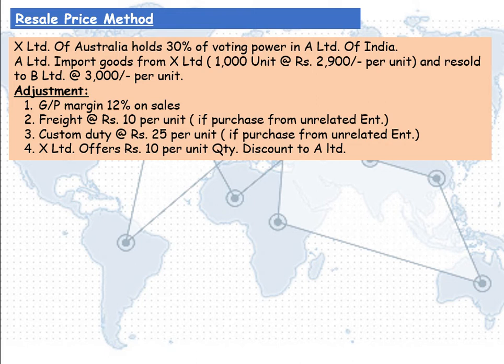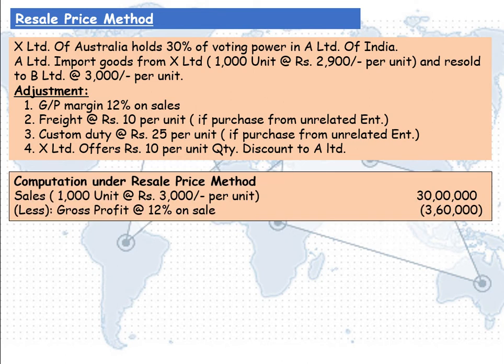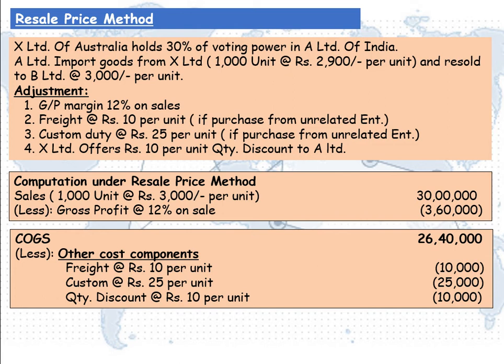We are computing the arms length price to determine whether the revenue shown by A Limited is correct or not. Therefore, we are only concerned about the income of companies generating revenue from India. A's sales are given as Rs 30 lakhs, that is 1000 units at the rate of Rs 3,000 per unit. Less gross profit margin at 12% on sale, which becomes Rs 3,60,000, so cost of goods sold comes to Rs 26,40,000.